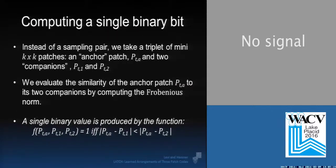Now, if the first companion is more similar to the anchor in the sum of squared differences sense than the second companion, we write 1 in the final resulting bit. And if not, we write 0.